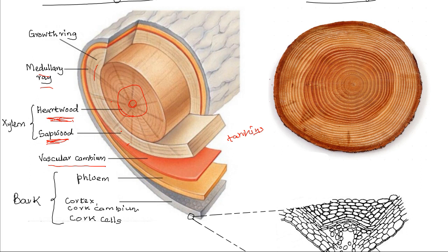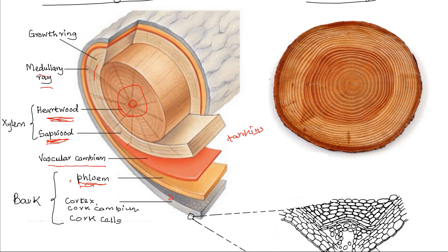Towards the periphery, you have both the primary and secondary phloem, which forms part of the bark. After the phloem, there is the secondary cortex, and in this layer you also have the cork cambium, with the cork cells forming the outermost part.